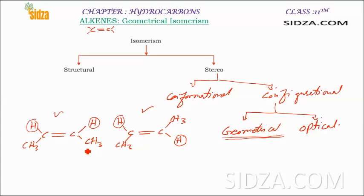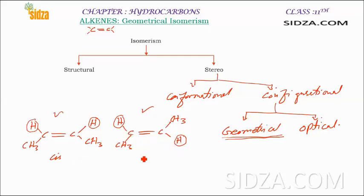We use the cis and trans terminology for these geometrical isomers. If the similar groups are on the same side of a double bond, we use the term cis — so that is a cis isomer. And if they are on the opposite side of a double bond, then it is called trans.